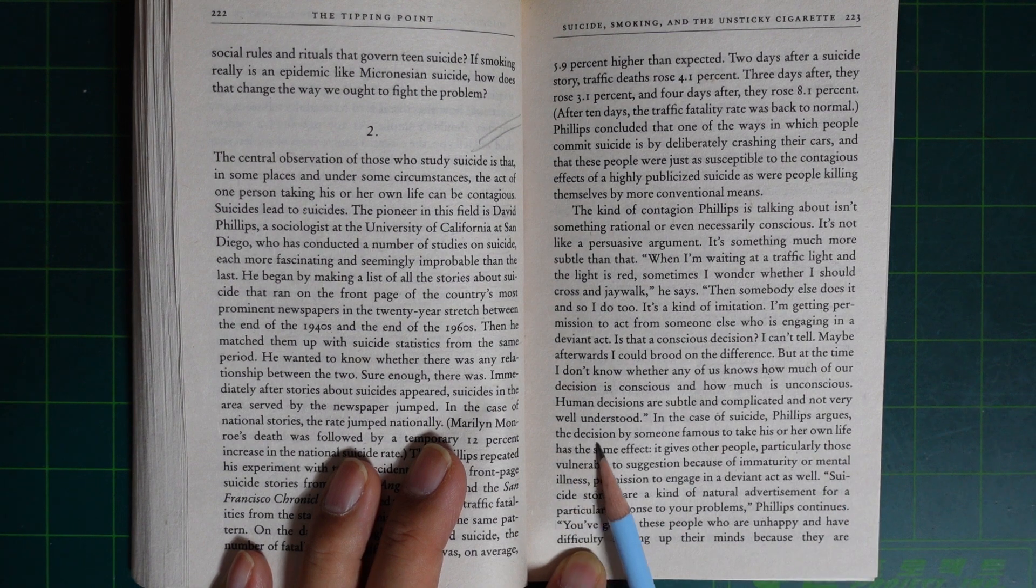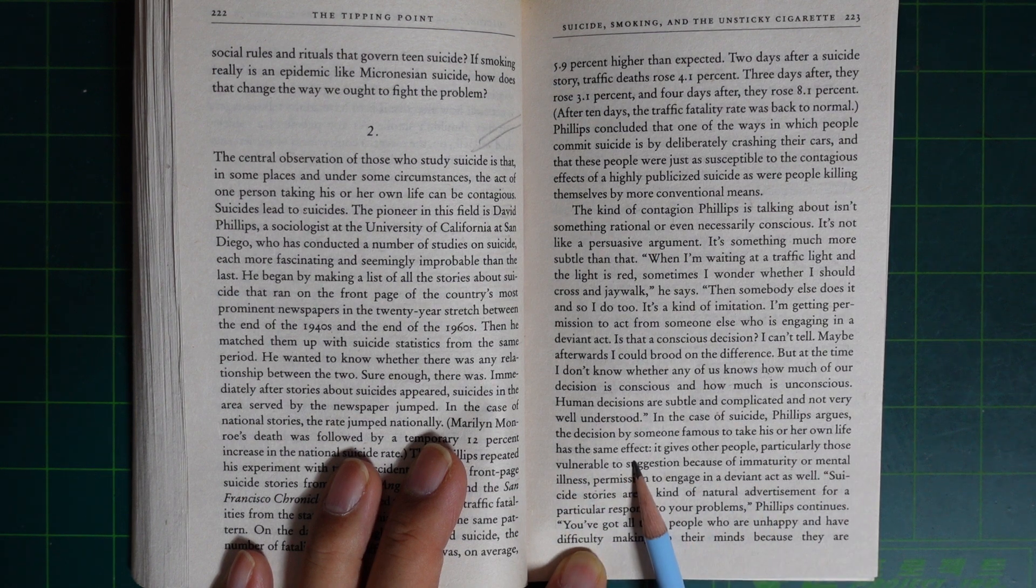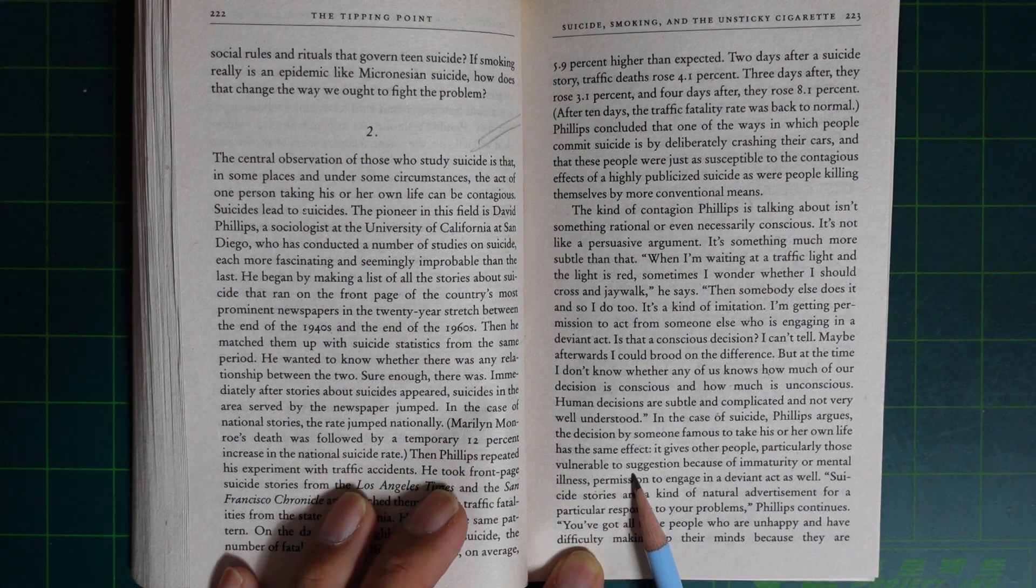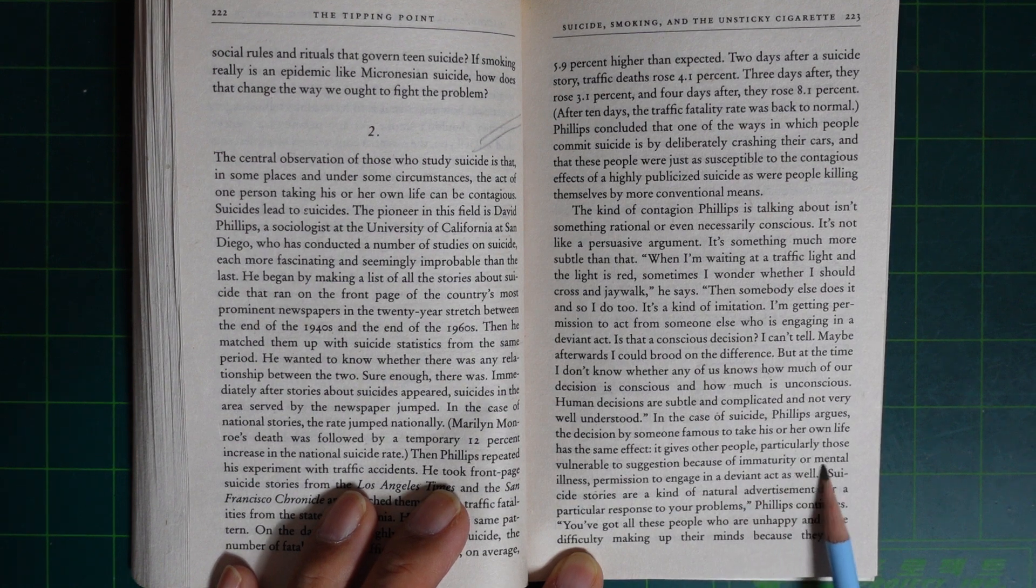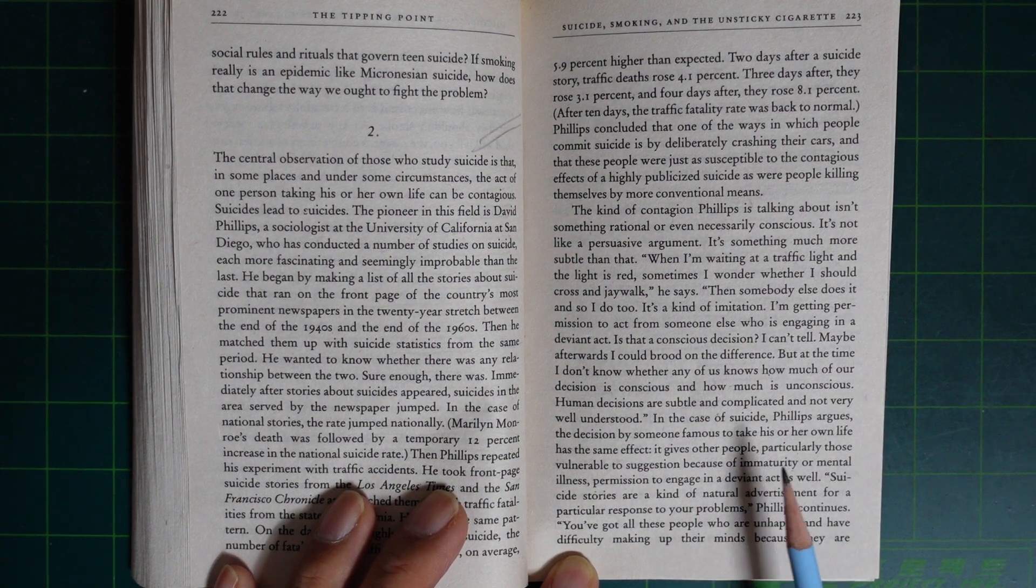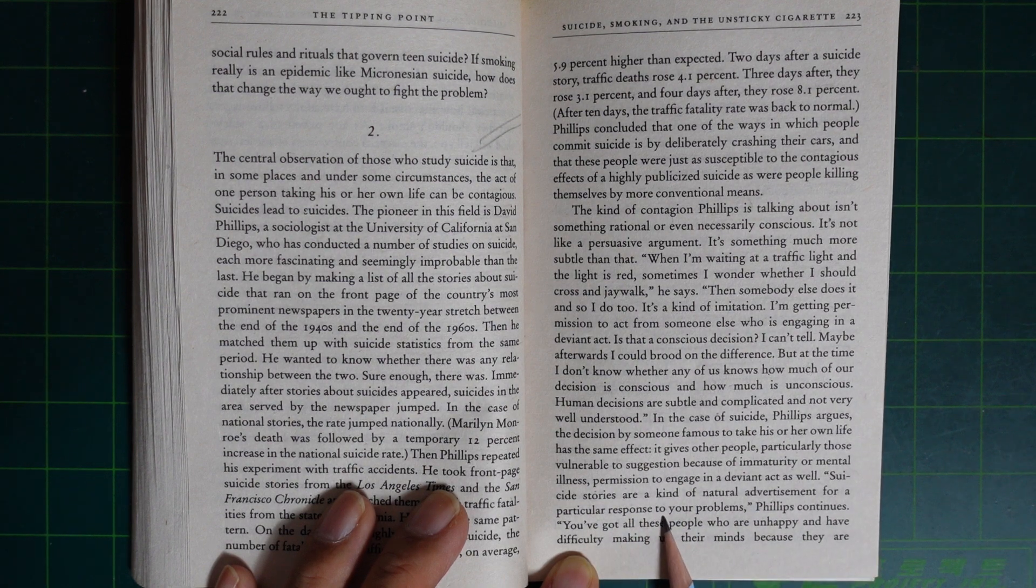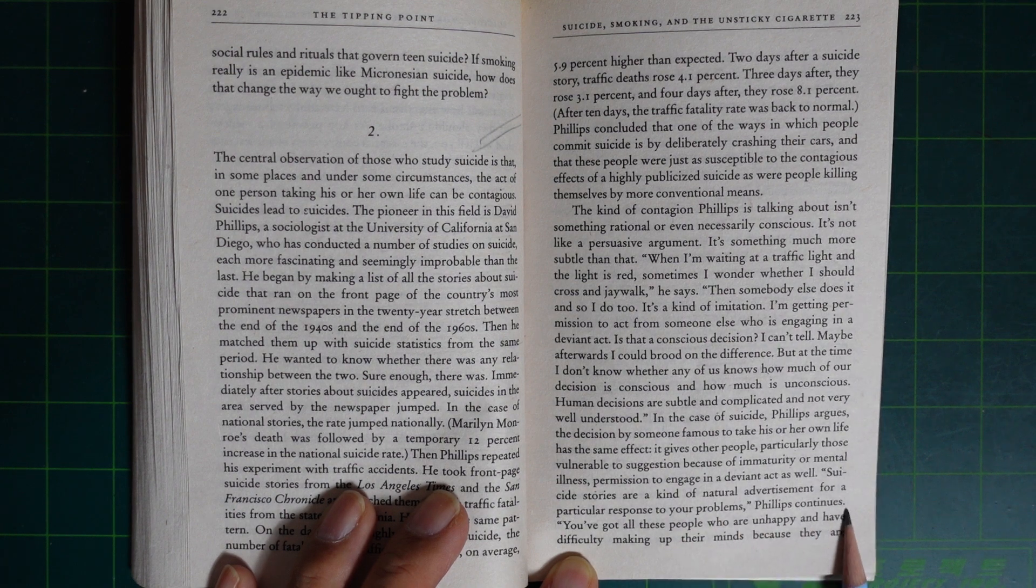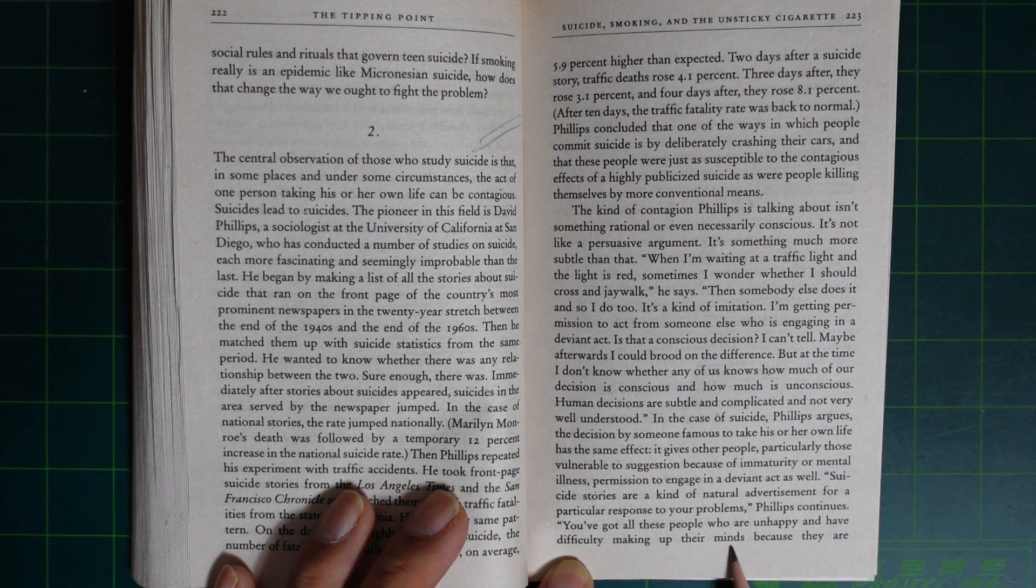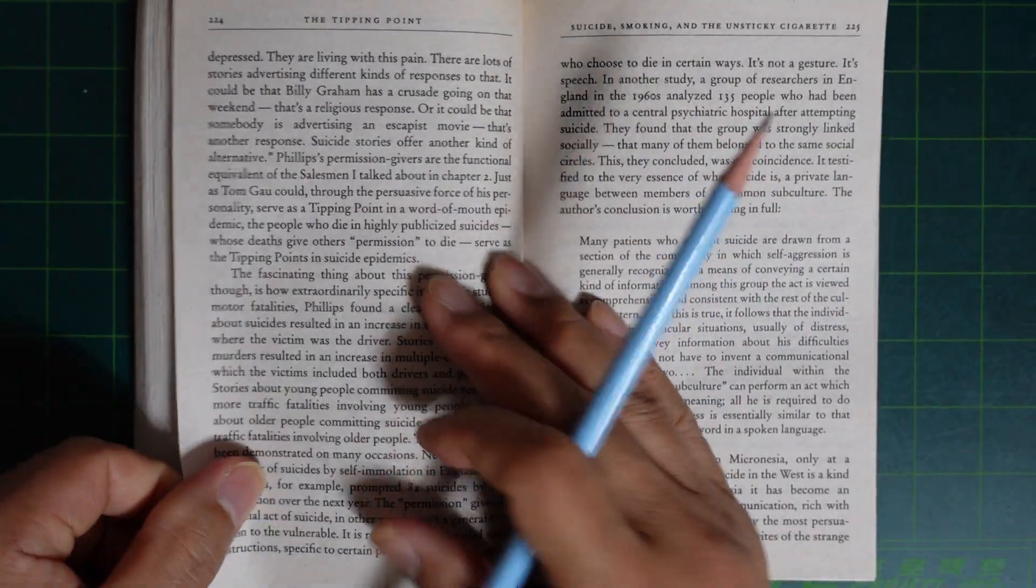In the case of suicide, Phillips argues, the decision by someone famous to take his or her own life has the same effect. It gives other people, particularly those vulnerable to suggestion because of immaturity or mental illness, permission to engage in a deviant act as well. Suicide stories are a kind of natural advertisement for a particular response to your problem. You've got all these people who are unhappy and have difficulty making up their minds because they are depressed.